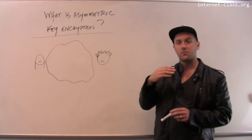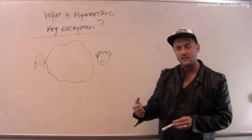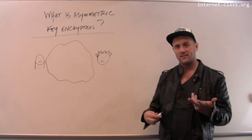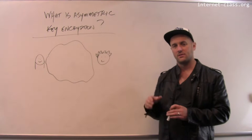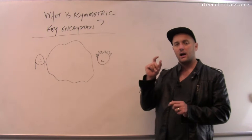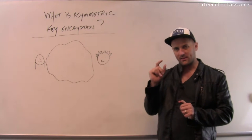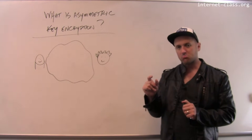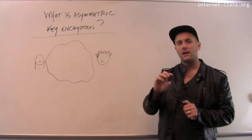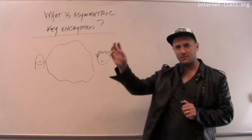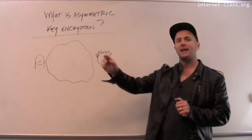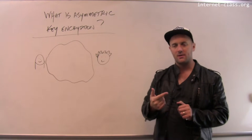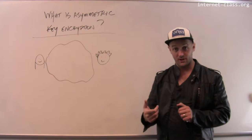The idea here is that we're going to exploit the existence of trapdoor functions to build a cryptography system where I can encrypt messages using one key and decrypt them using a different key.